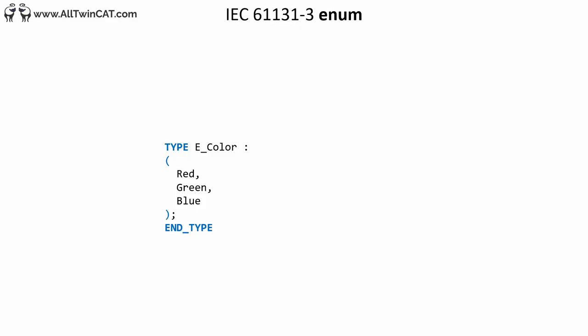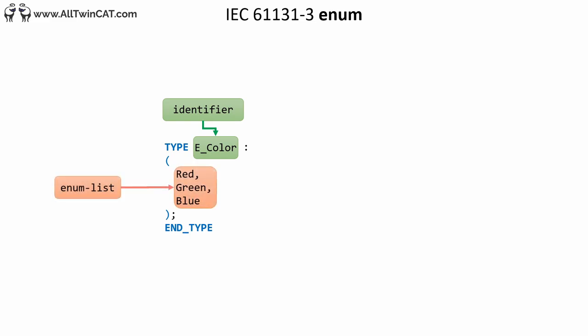An enumeration is a user-defined type that consists of a set of named integral constants known as enumerators. With enumerations it's possible to put descriptive labels on data without having to put comments in the code. An enumeration consists of an identifier which you use when you instantiate it, and an enumeration list defining the different values it can have. An enumeration has a default base type of INT — the 2-byte integer — and implicitly the first value is assigned 0, the next 1, and so on.